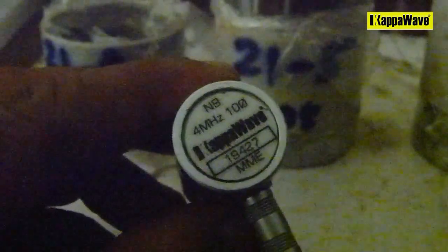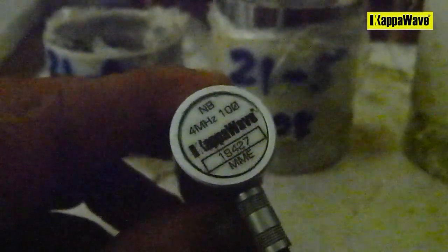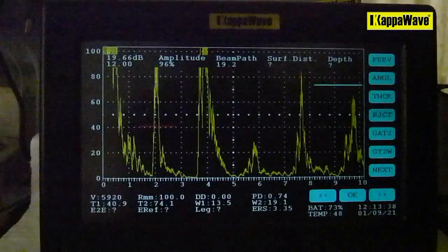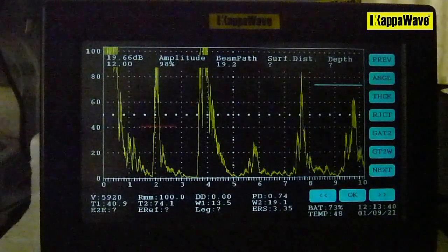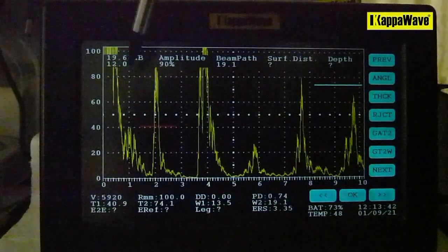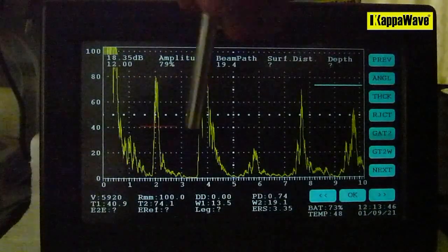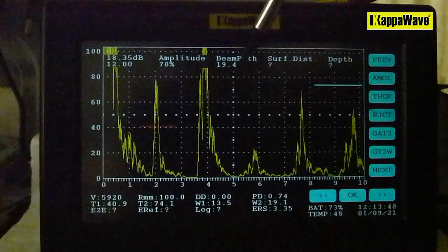I'm using a normal beam probe, standard normal beam probe, 4 megahertz, 10 millimeter size. I have the signal from a flat bottom hole of 1.9 millimeter here, currently with a range of 100 millimeter. As you can see, the beam path is 19.4 millimeter. I'll just bring it up to about 80 percent or so.